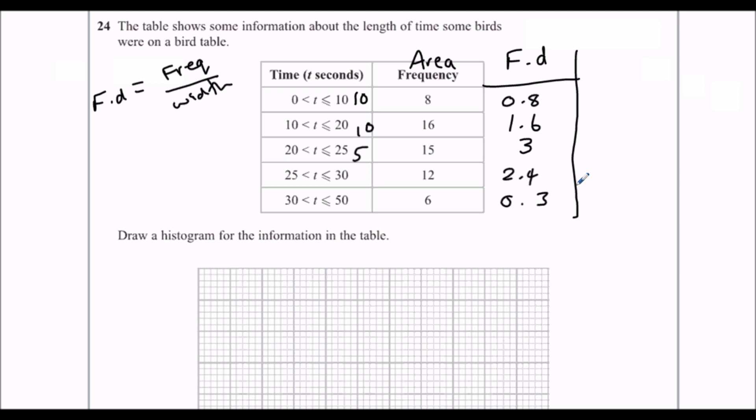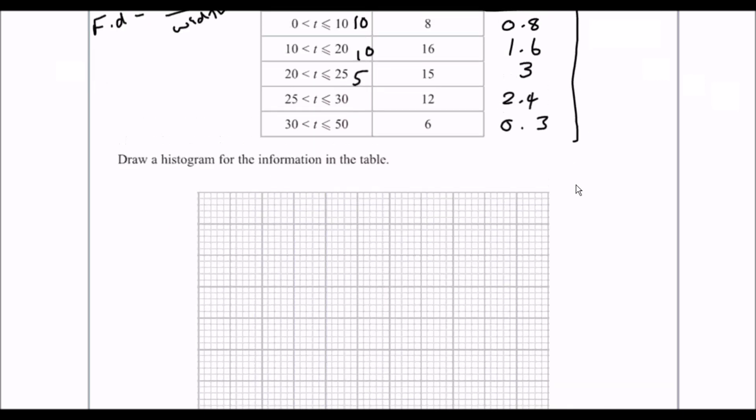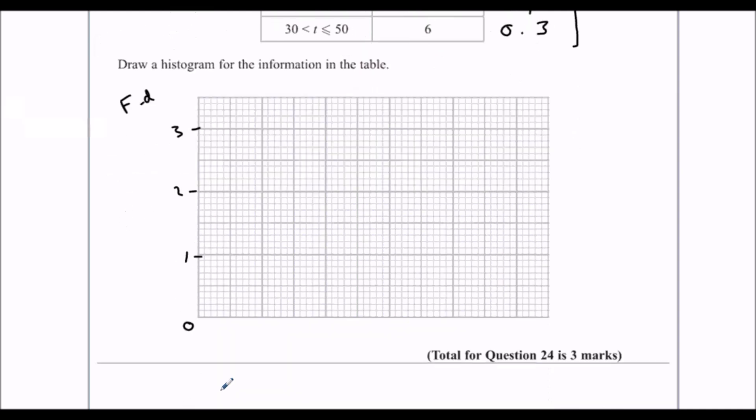Okay, then we're going to draw the histogram. So we need to work out how the scale is going to look up the side. So it needs to go up to 3. So we'll have 1, 2, and 3. And this is frequency density. 0 down here. And the time goes up to 50.